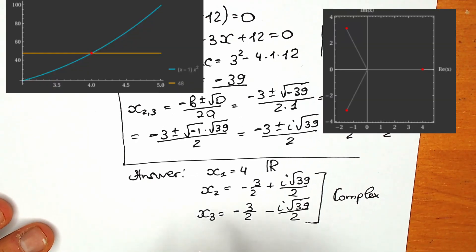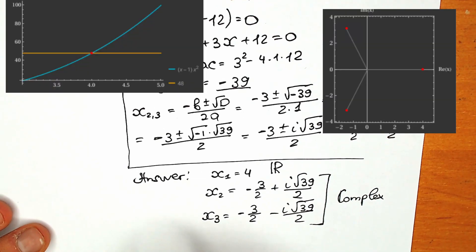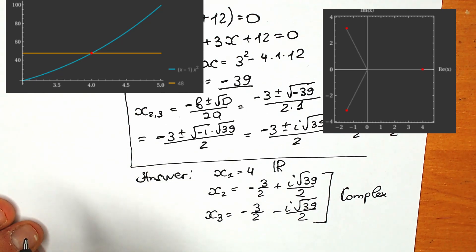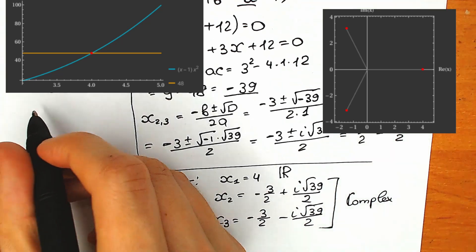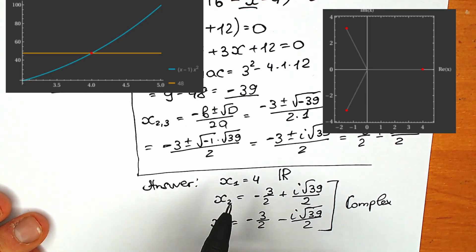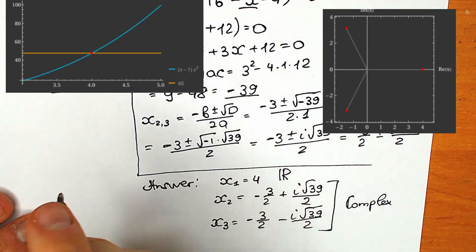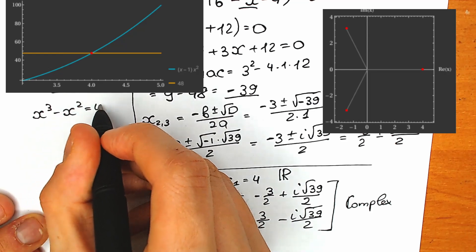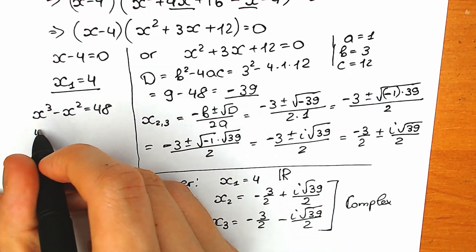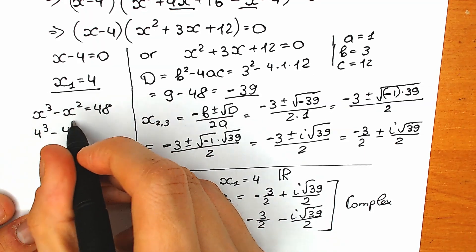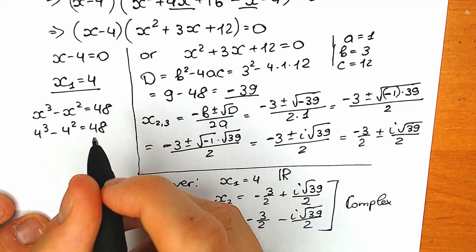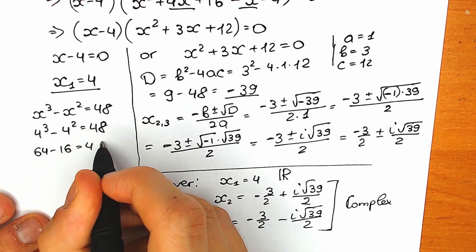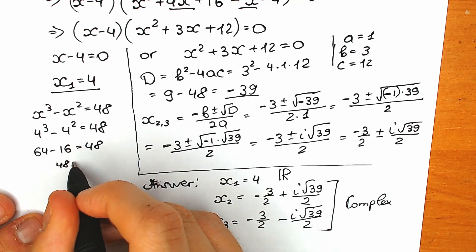Right now we can see a graph — you can see a plot, you can see the point of intersection, which is really great to see this question from a geometric perspective. Let's check the real number root: x-cube minus x-square equals 48 becomes 4-cube minus 4-square equals 64 minus 16 equals 48. Yes, this is a correct expression.